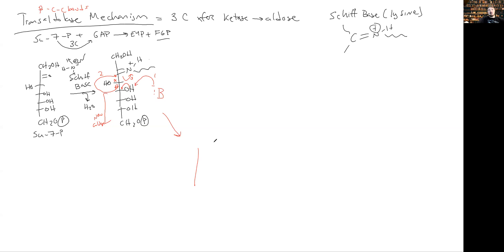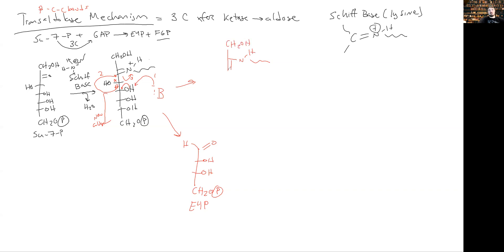On the bottom, we're going to have our new aldose — it's right, right: E4P. On the top, we're going to end up with the enamine of the Schiff base. And just like we saw with TPP, if we push the single resonance form, we develop charge out here on the end.